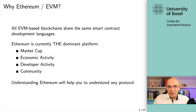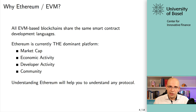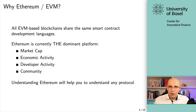Moreover, and this is really important to understand: we didn't just pick a random one. When you look at the current state of the ecosystem of smart contract capable blockchains, Ethereum is by far the most popular one. It's the dominant platform in terms of market cap of the native protocol asset, but also in terms of economic activity, developer activity, and in terms of the community. Pretty much anything right now is Ethereum-based, as of the time of this recording.